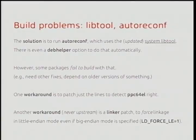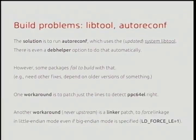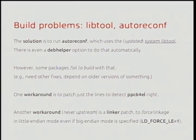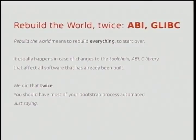The solution for that is to run autoreconf when you're building, which kind of updates the local package from the system libtool, which can be updated to carry your patches for the new architecture. There's even a debhelper option that runs that automatically when you're building the package. But some packages have problems with that and fail to build once you enable it — mostly because they depend on older versions of some of the tools that autoreconf runs. So one workaround is to patch just enough of the files to detect the new architecture correctly. Another workaround — which we never sent upstream — was a patch for the linker which forced it to link in little-endian mode even if it was specified to link in big-endian mode. It was LD_FORCE_LITTLE_ENDIAN=1 as the environment variable.